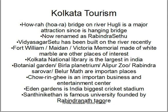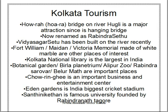Kolkata's National Library is the largest in India, which is why Bengalis are called intellectuals. The Botanical Garden, Birla Planetarium, Alipur Zoo, Rabindra Sarovar, and Belur Math are other important places. Shantiniketan is famous as it was founded by Rabindranath Tagore. Eden Gardens is the biggest cricket stadium. Chowringhee is an important business center, and Belur Math is famous because Sri Ramakrishna and Vivekananda are associated with it.